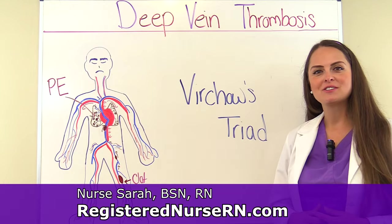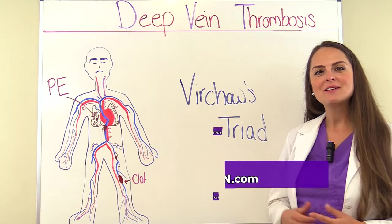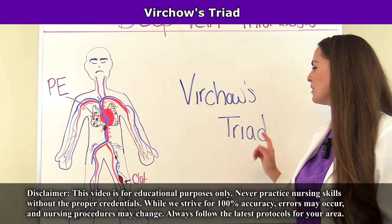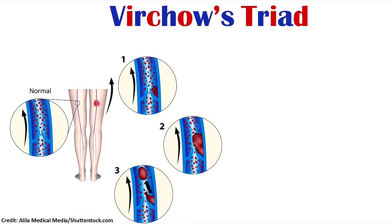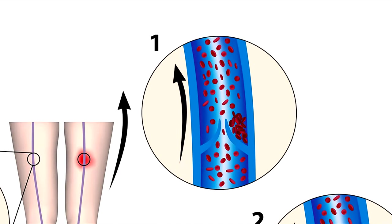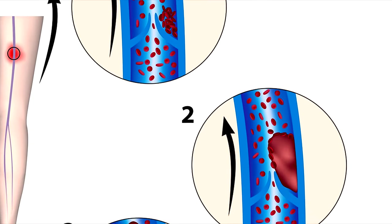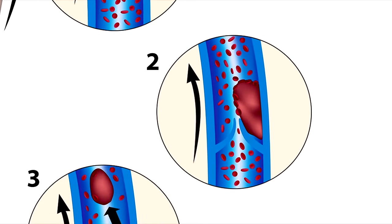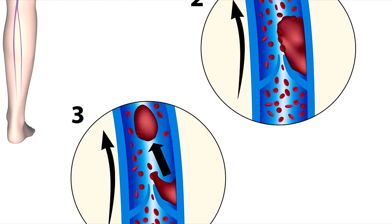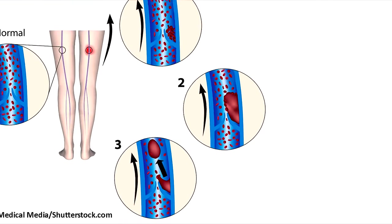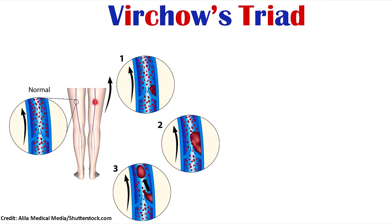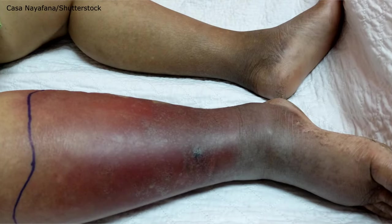Hey everyone, it's Sarah with RegisteredNurseRN.com, and today I'm going to go over Virchow's Triad. Virchow's Triad helps us identify the three main factors for why a blood clot develops within the deep veins. So we can look at these risk factors identified by Virchow's Triad and take preventative measures in our patients to prevent them from developing a blood clot.